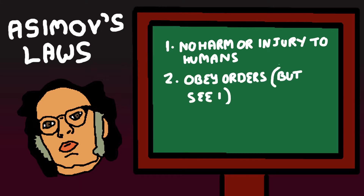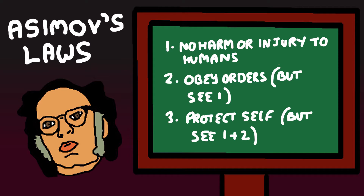Two, a robot must obey the orders given to it by human beings except where such orders would conflict with the first law. And three, a robot must protect its own existence as long as such protection does not conflict with the first or second laws.